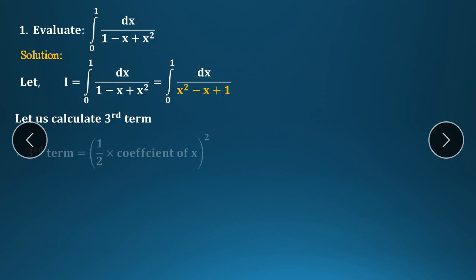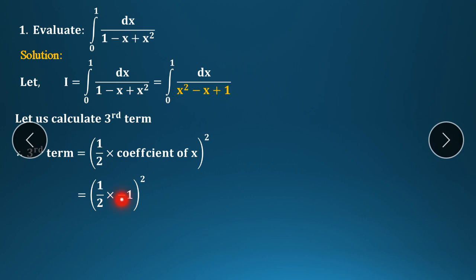The third term formula should always be remembered: third term = (1/2 × coefficient of x)². Here the coefficient of x is minus 1, so we substitute: (1/2 × (−1))² = (1/2 × (−1))² = (−1/2)².